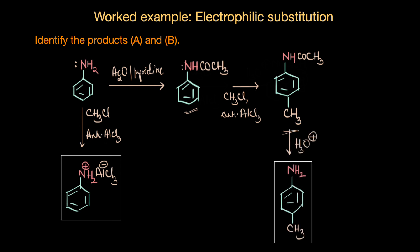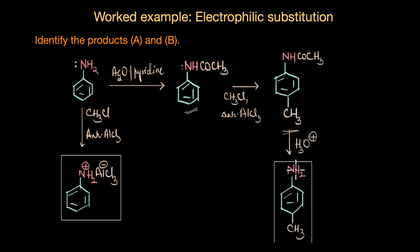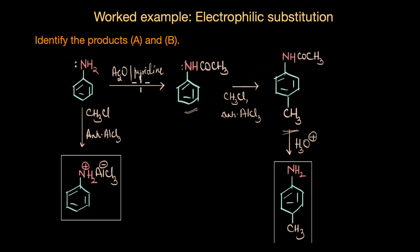On hydrolysis we get our NH2 group back. So if we perform the Friedel-Crafts reaction directly on aniline we get no desired product, but by protecting the NH2 group through acetylation, we control the reaction to obtain the most selective para product.